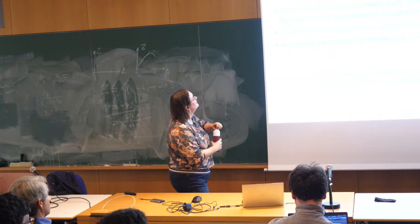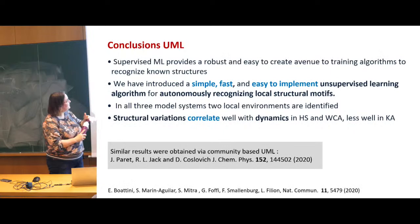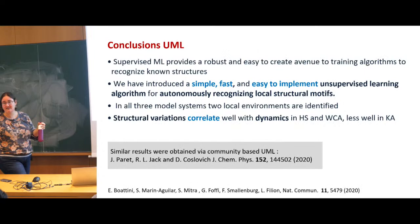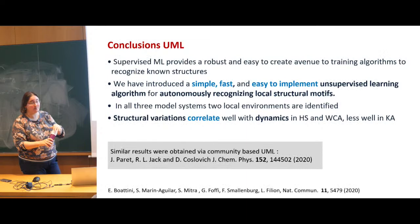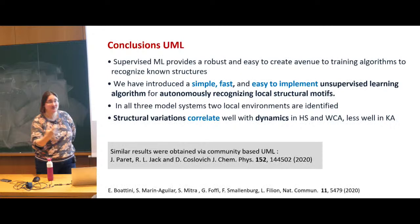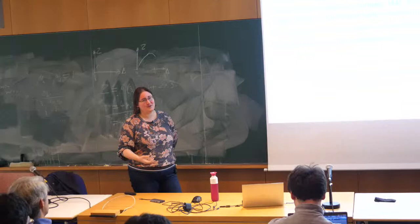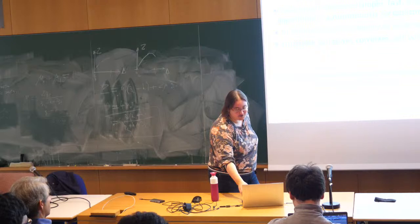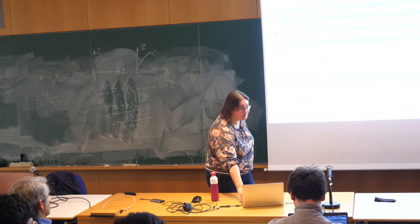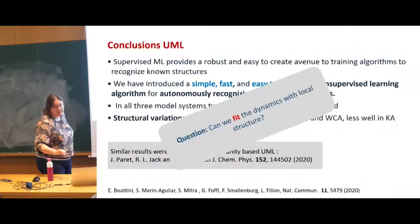Conclusions for this section: we've introduced a simple, fast, and easy-to-implement unsupervised algorithm for autonomously recognizing local structural motifs. These kinds of unsupervised algorithms generally might have significant potential in trying to recognize structural differences in glassy systems. I have to admit we're very far from there — we're looking at correlations that were numbers like 0.6, maybe 0.4 in the case of Kob-Andersen or even worse. I think they are interesting but there's still a lot to do and a lot of potential for recognizing structure in this way.